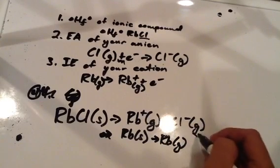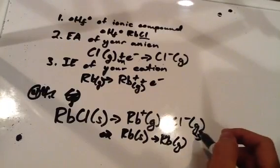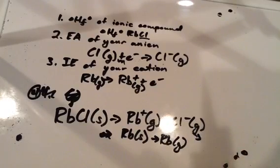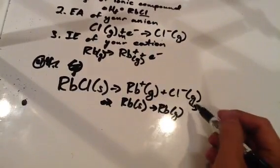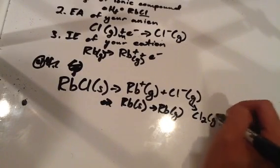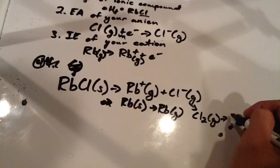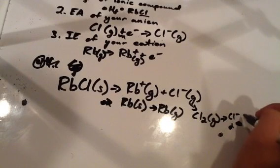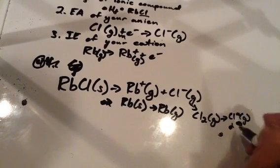Likewise, this is already a gas, but is chlorine going to be found as one chlorine? No, it'll probably be Cl2 gas. So you'll want to convert that into your Cl- gas, or just write one Cl.